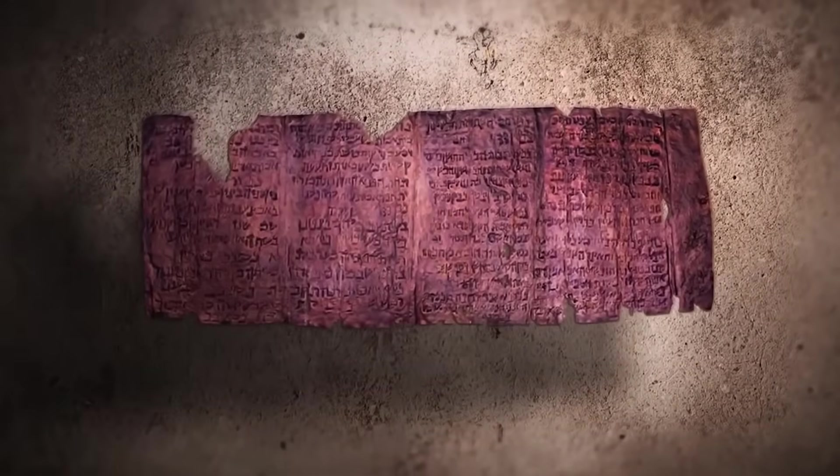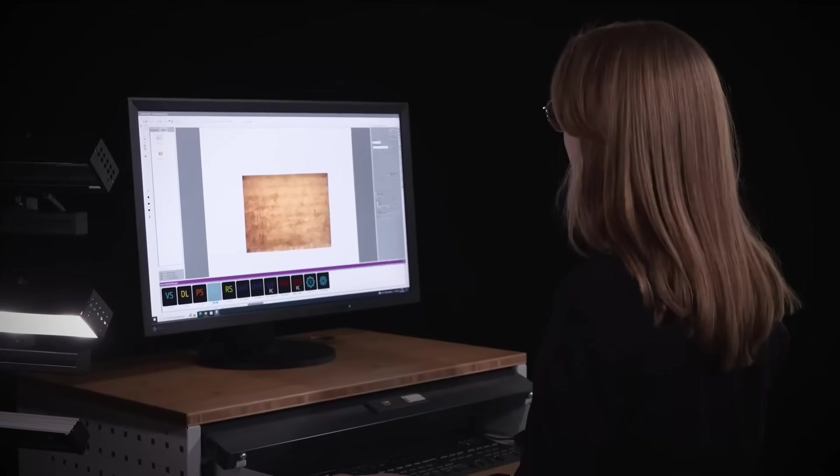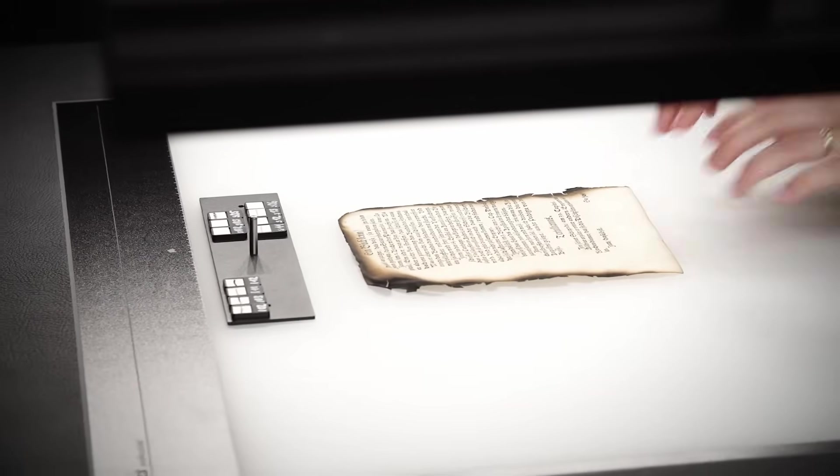When researchers pointed it at heavily corroded sections of the scroll, something extraordinary happened. The AI reconstructed a phrase that translates to, under the ruin in the hill, buried is an eternal vessel of radiance.